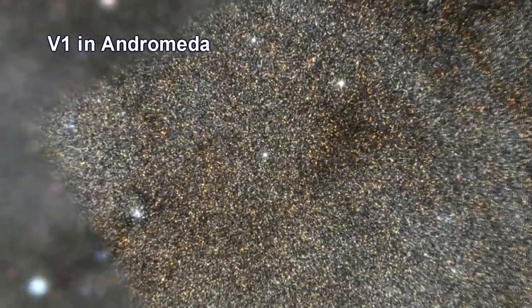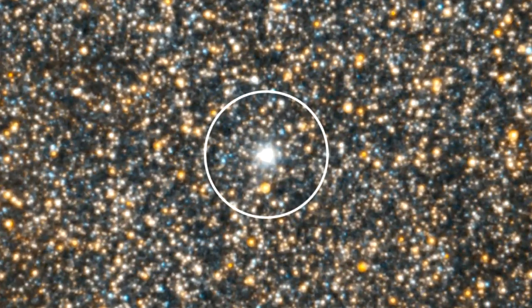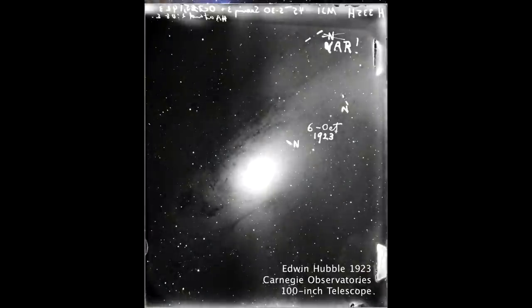The star altered the course of modern astronomy. The star goes by the name V1. Here's Edwin Hubble's image of Andromeda, which was made on a 4x5 inch glass plate and dated October 6th, 1923.